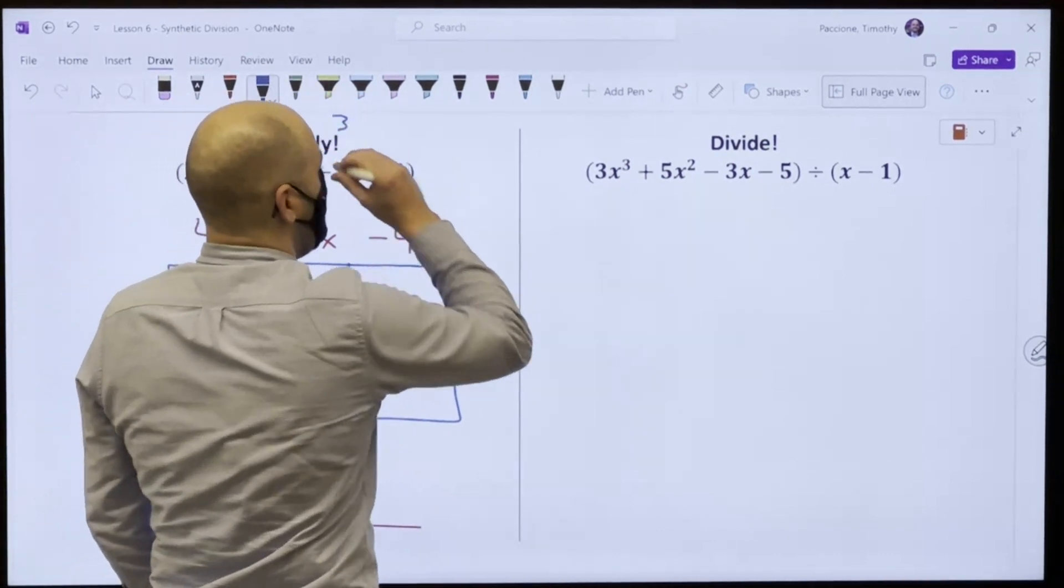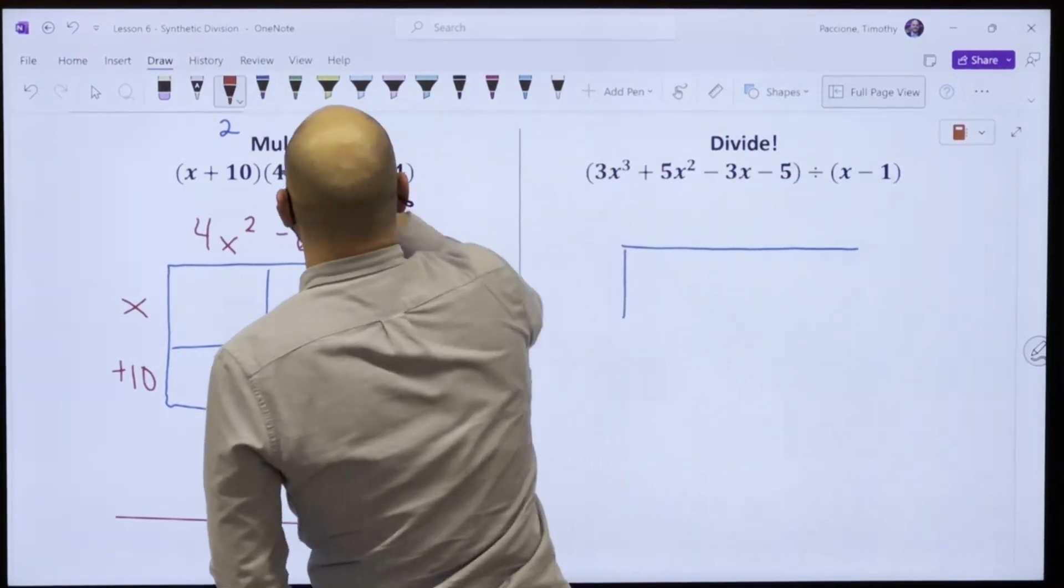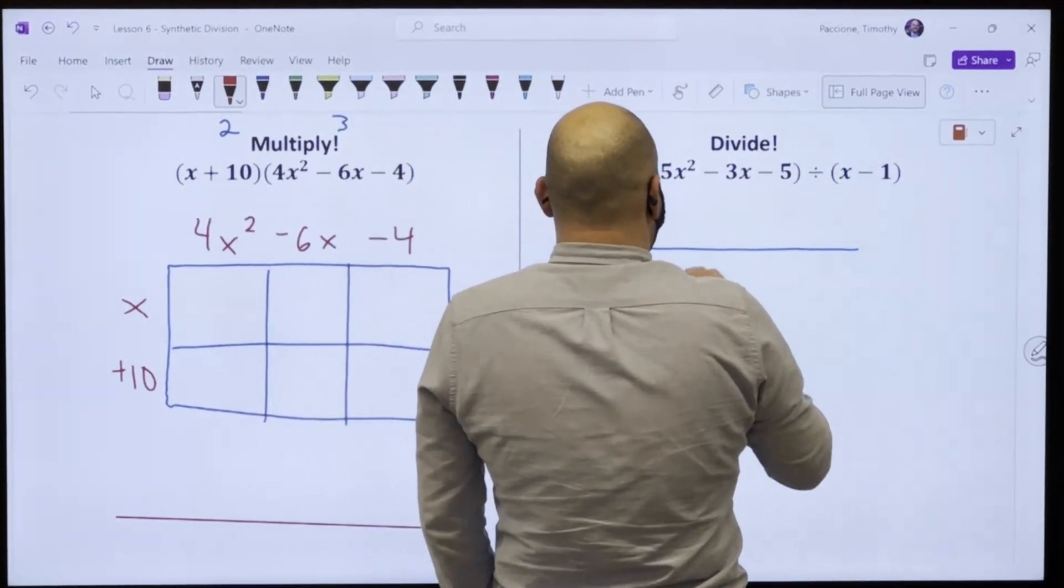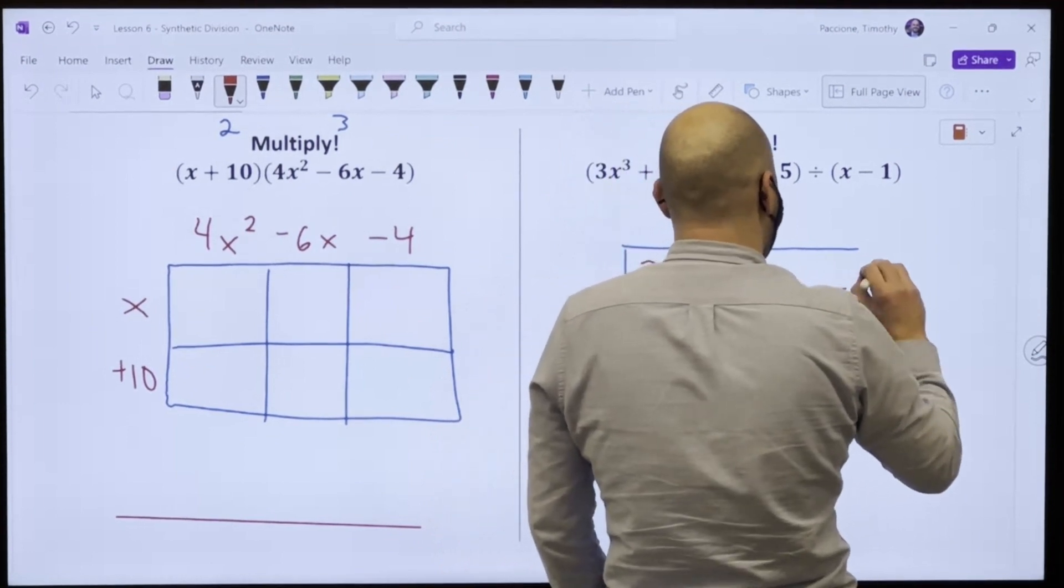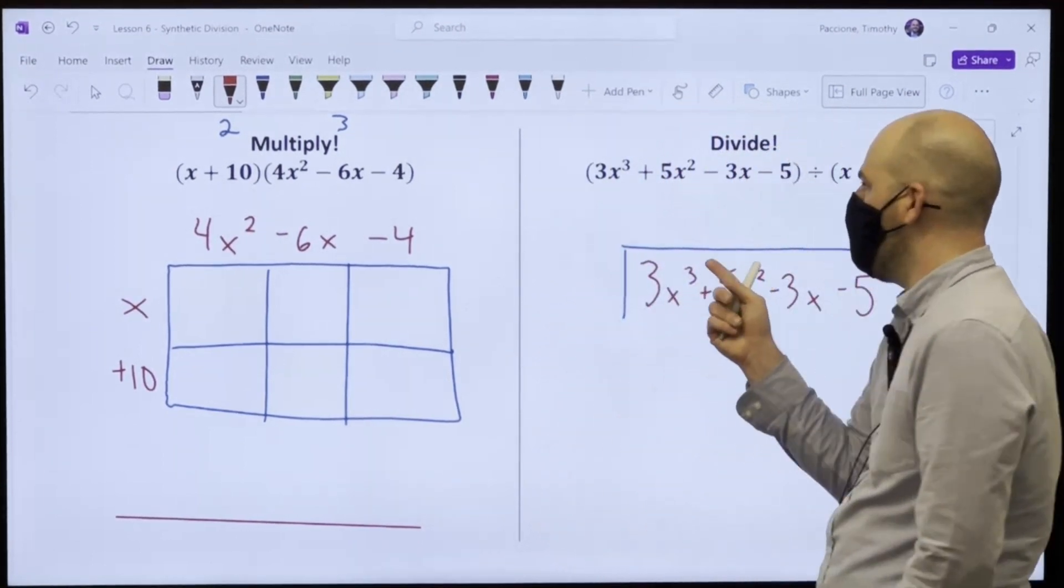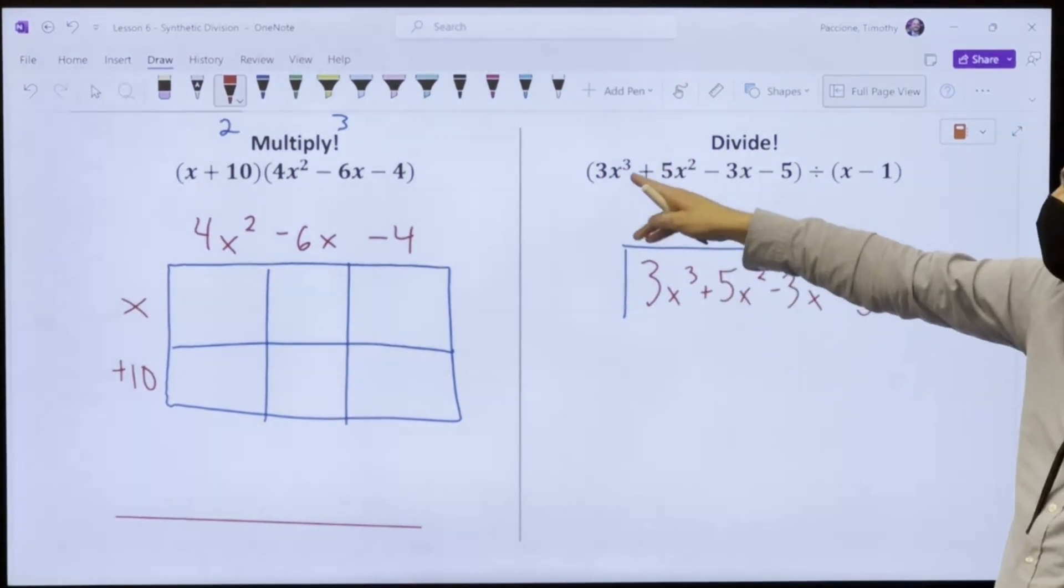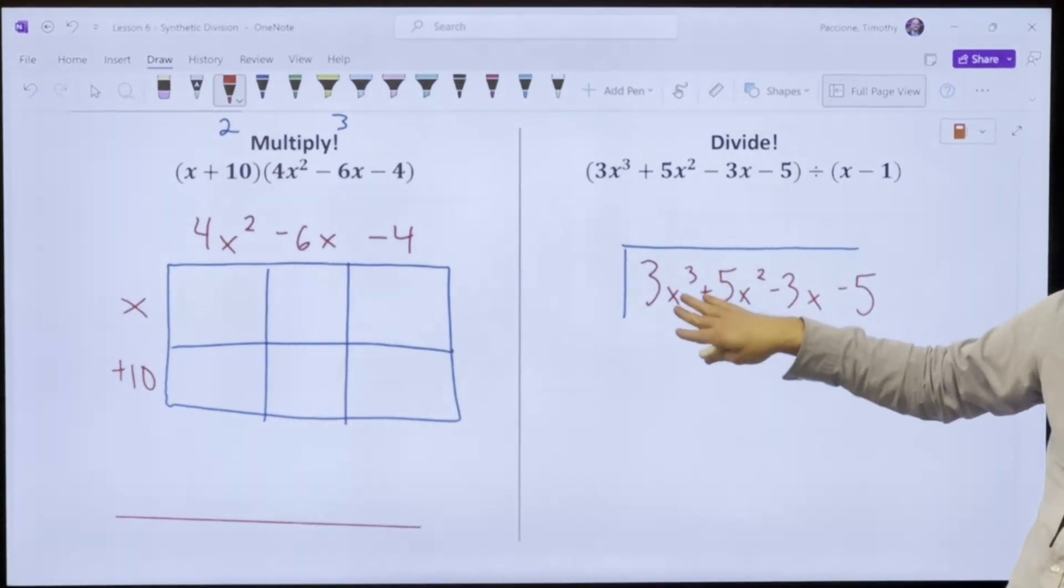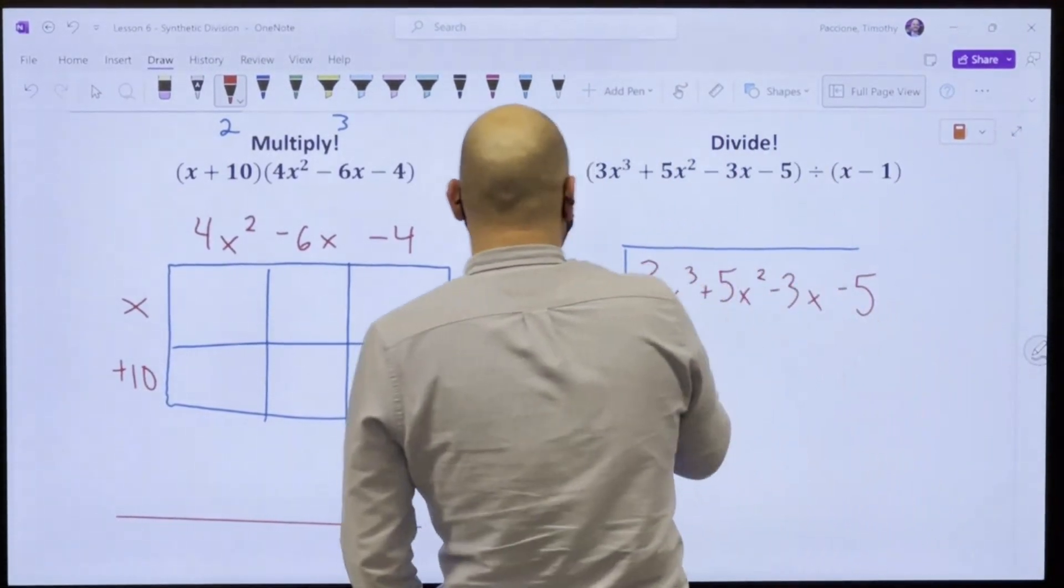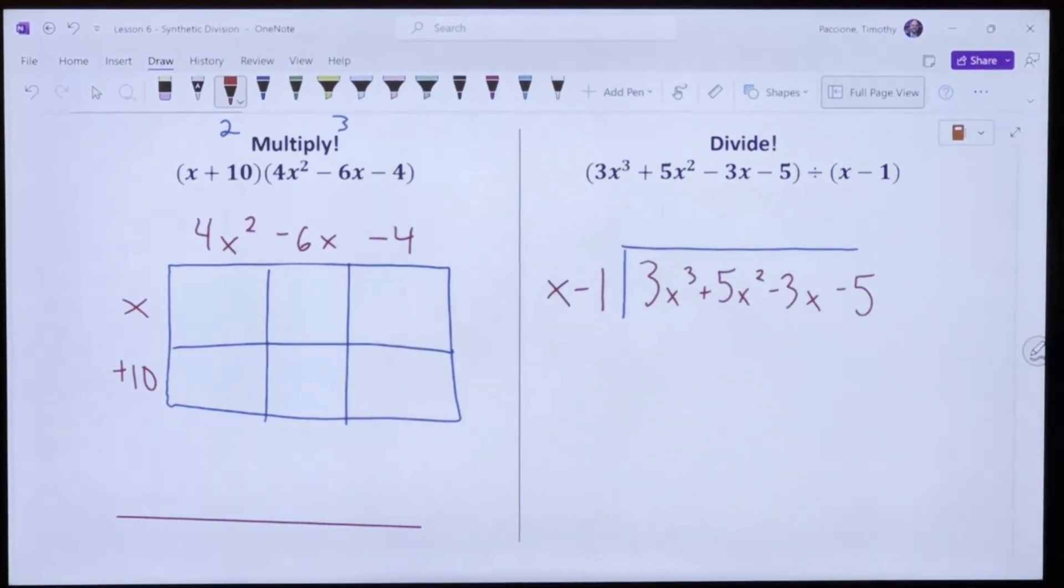Over here I'm dividing so I make an upside down L, 3x to the third plus 5x squared minus 3x minus 5. I didn't need a zero because I went three, two, one, nothing. If it went like three to one and there was no x squared, I would put a zero x squared in there. On the outside I have x minus 1, go from there. I'll give you more time.